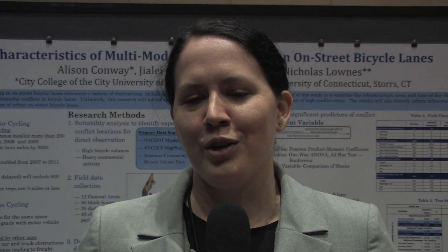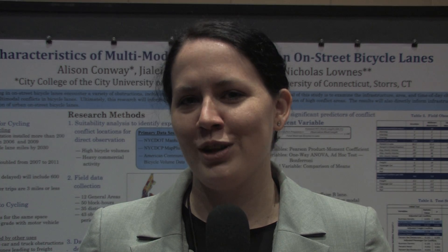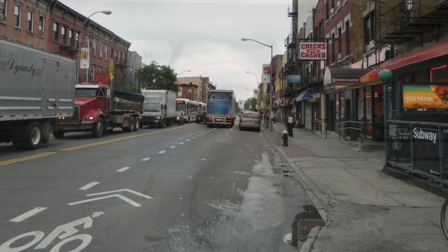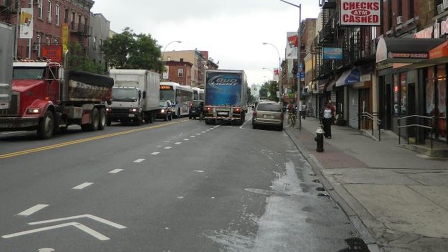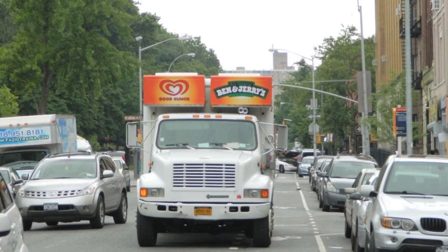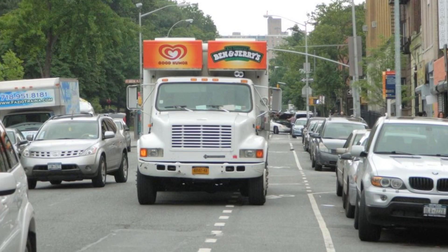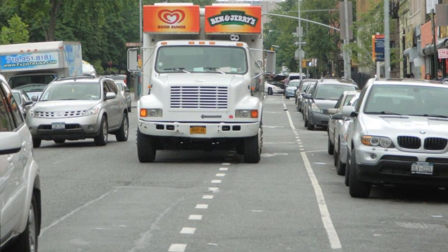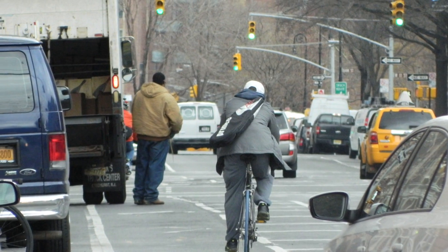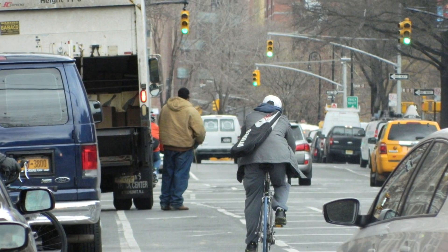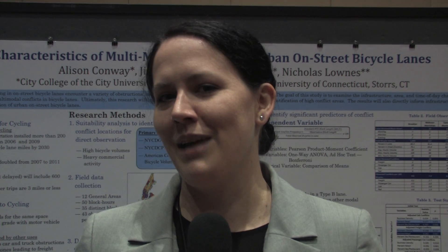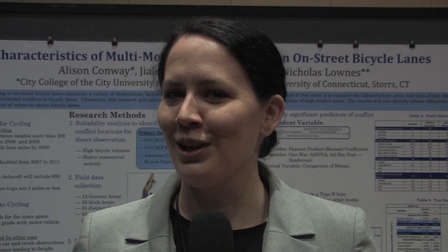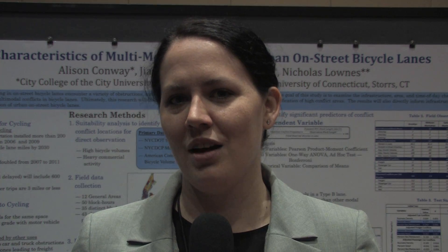The goal of this project was to go out and look at what types of conflicts are happening in bicycle lanes, and address the characteristics that would allow us to predict where conflicts are going to happen — what types of bicycle lane designs, what types of land uses, time of day, and different variables — to figure out how we can make decisions that take a more holistic view of the bicycle network.